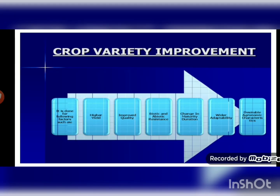Wider adaptability: particular crops grow in particular climatic conditions, seasons, and soil types. If we develop crop varieties with wider adaptability, it helps establish crop production under different environmental conditions, and one variety can be grown in different climatic conditions across different areas. Earlier, certain food products were available only in particular areas, but nowadays many varieties are grown in different parts of the country, increasing overall production.